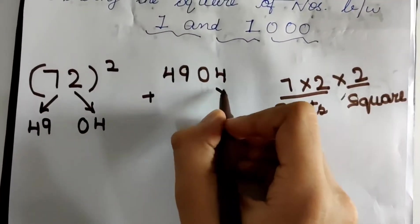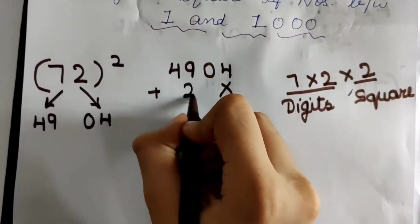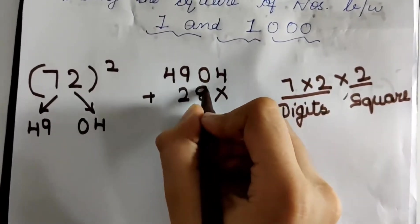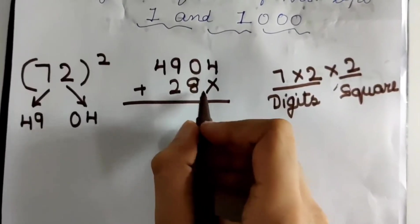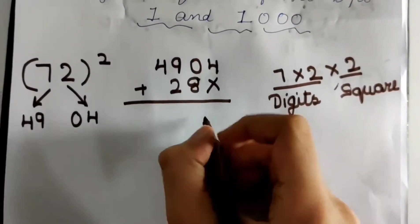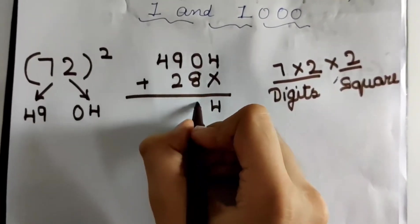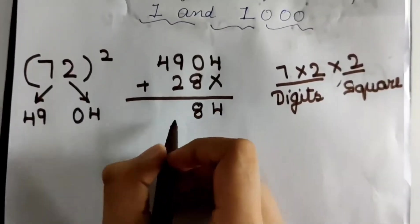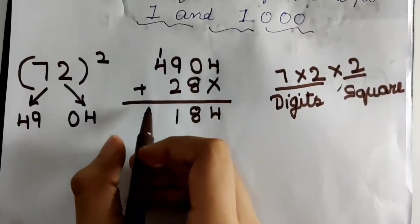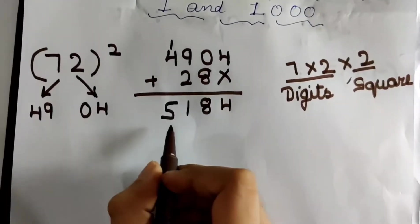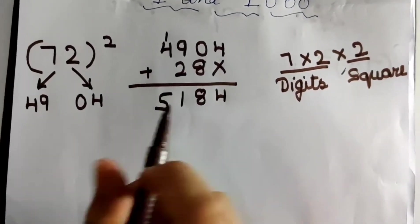I will leave the 1 space and start writing 28 from the 10 space. Now, x or cross is nothing but 0. So 4 plus 0 is 4, 0 plus 8 is 8, 9 plus 2 is 11. I will put 1 as a carry. So 4 plus 1 is 5. So 5184 is the square of 72.